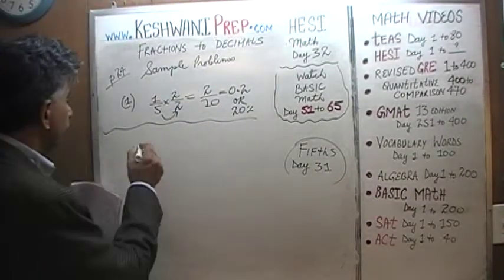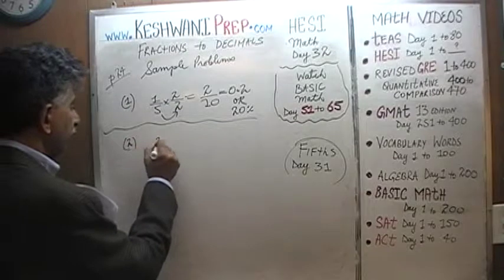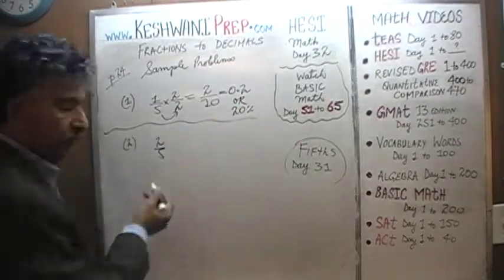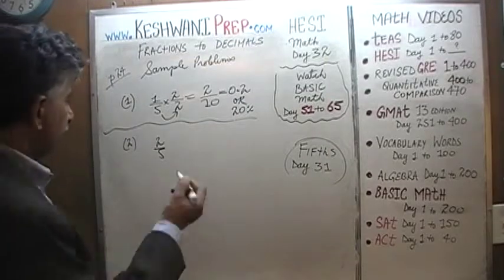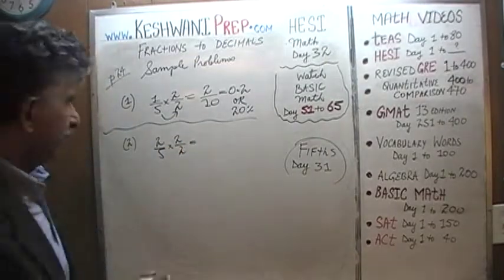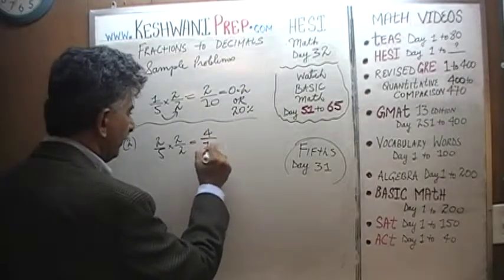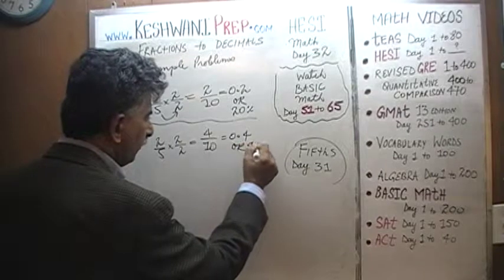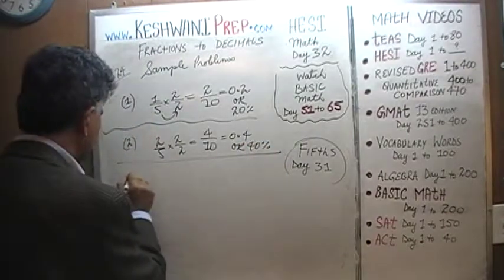This is too simple. The next problem we have is two-fifths. We don't have to do anything. If one-fifth is twenty percent, two-fifths will have to be twice as much. It's forty percent. Let's do it out anywhere. Divide, multiply top and bottom by two, we end up with four over ten, which is same as 0.4 or forty percent. Let's do the next one, number three.